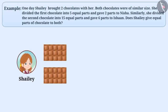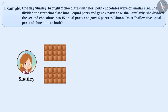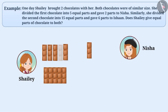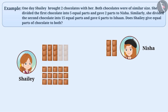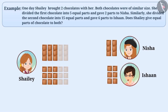One day, Shelley brought two chocolates with her. Both chocolates were of similar size. She divided the first chocolate into five equal parts and gave two parts to Nisha. Similarly, she divided the second chocolate into fifteen equal parts and gave six parts to Ishan.